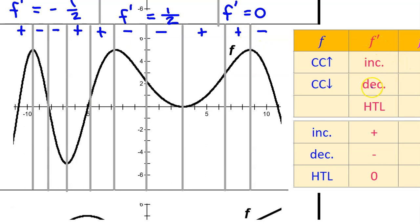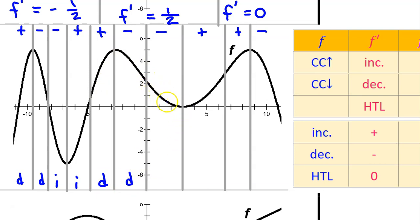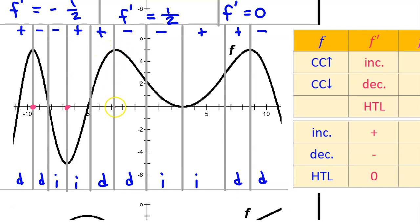Now let's label f prime as increasing or decreasing in each interval, depending on whether f is concave up or concave down. In the first two intervals, f is concave down, so f prime will be decreasing in both. In the next two intervals, f is concave up, so f prime will be increasing. Next two intervals, f is concave down, so f prime is decreasing. Then concave up gives us increasing, and concave down gives us decreasing for f prime. Wherever f has a horizontal tangent line, f prime will be exactly zero — and I can identify five such points on this graph.